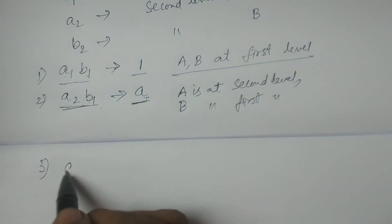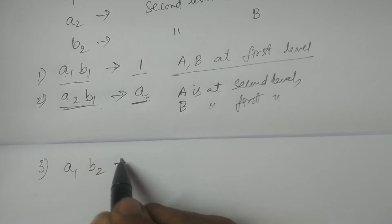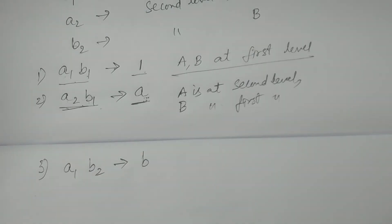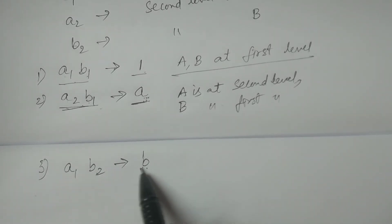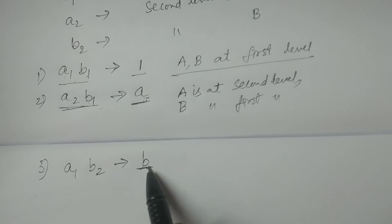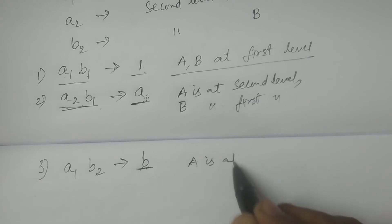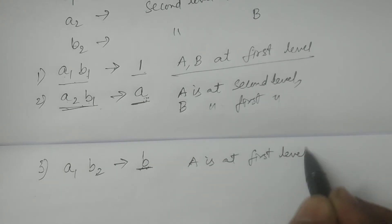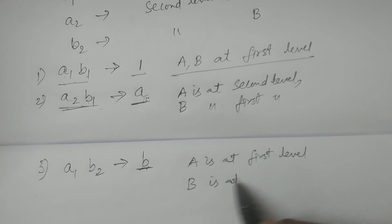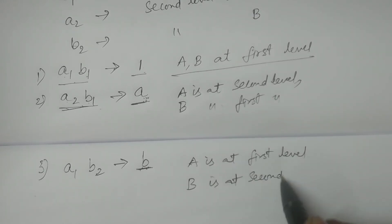The third combination: A1, B2 is indicated by 'b'. Because factor B is at second level, we indicate B. A is not represented here, therefore the absence of A indicates the first level of A. So 'b' means A is at first level and B is at second level.